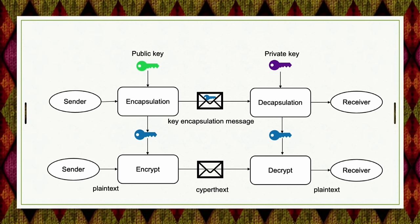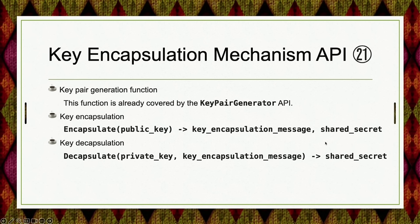The KEM API has three parts: key pair generation using the existing KeyPairGenerator API; the encapsulation function, which is new; and the key decapsulation function, also new, needed to decapsulate the received shared key. Once both sender and receiver share the key, the encryption and decryption proceed using that symmetric algorithm. You can use KEM to first transmit the shared symmetric key and then use it to efficiently encrypt data.